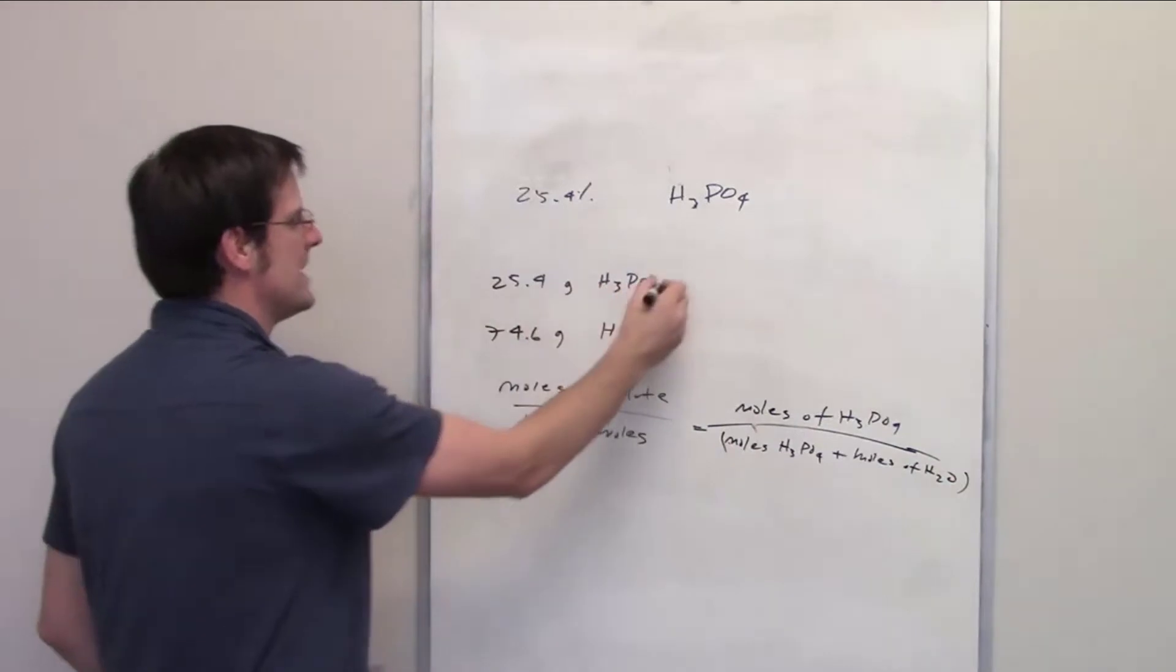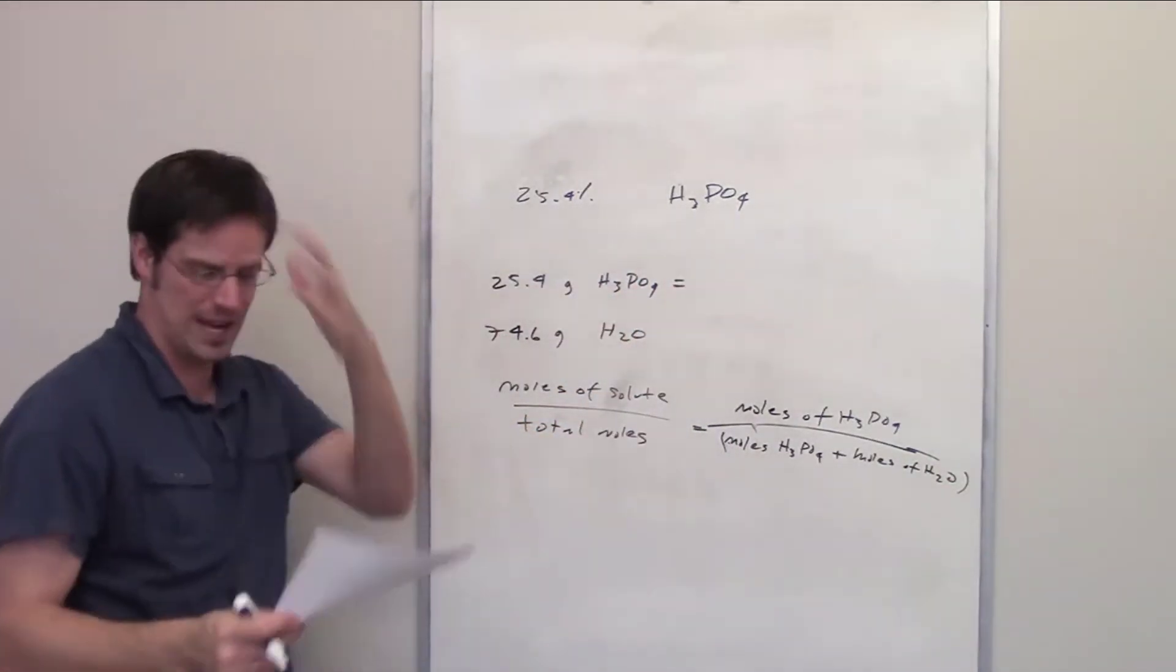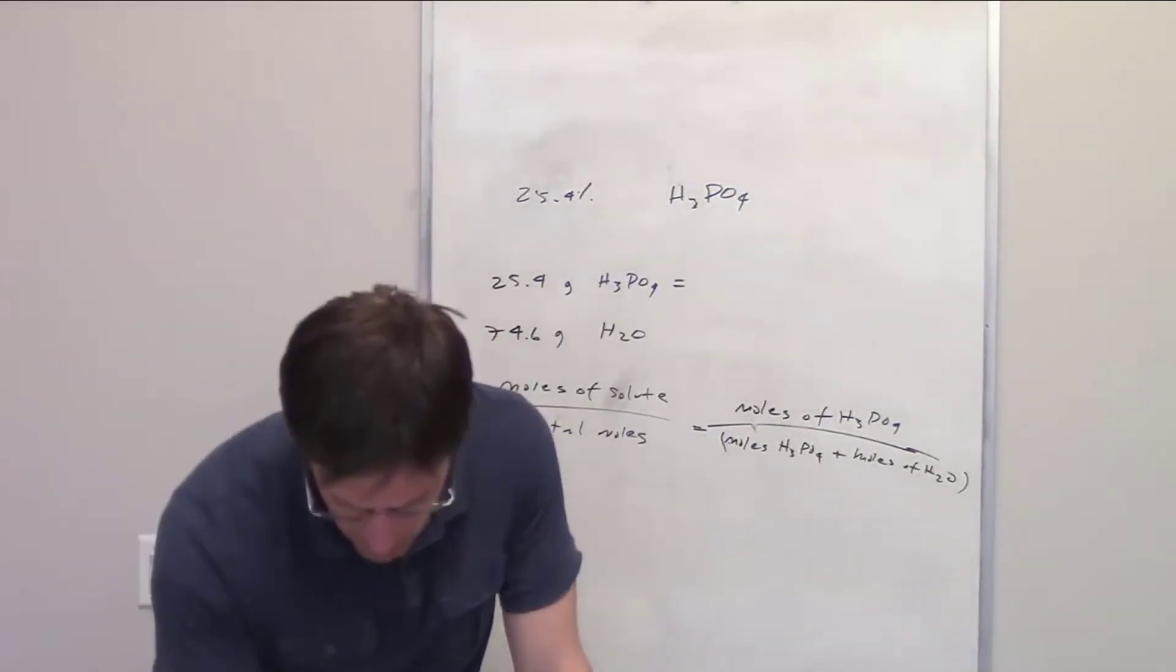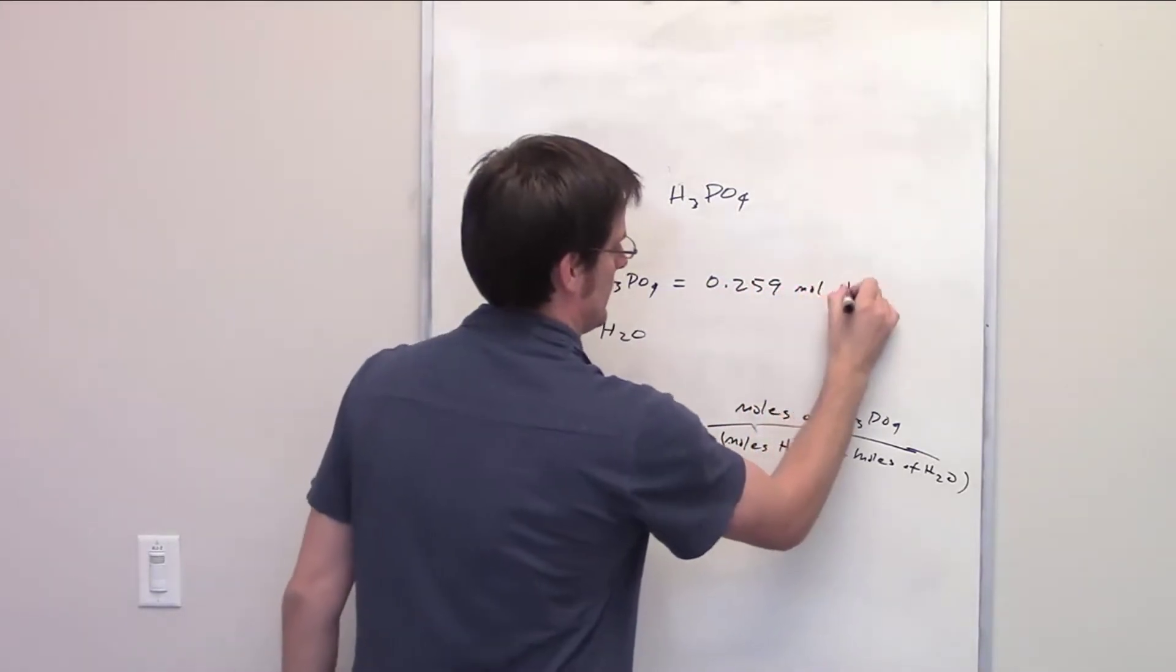So here's what I do. We did determine in the previous problem the total number of moles that 25.4 grams of phosphoric acid is, and that came out to be 0.259 moles of phosphoric acid.